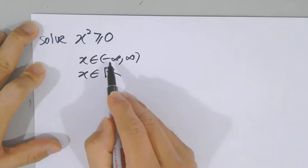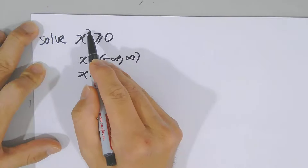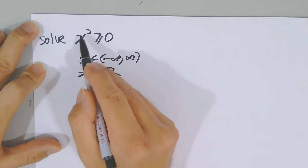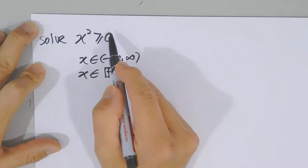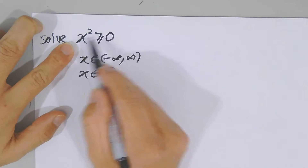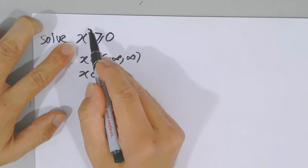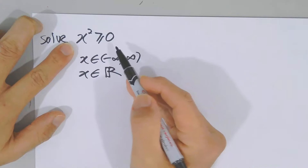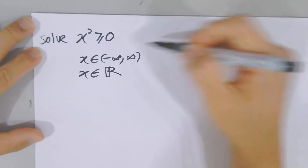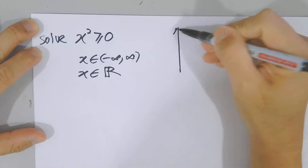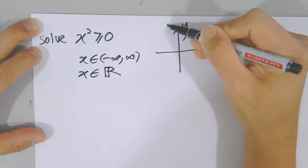Any number, when you square it — including zero — you get at least zero. Negative numbers squared also give you a number bigger than zero. So any number can be accepted. If you have more understanding, you know how to draw a graph to describe what you understand.